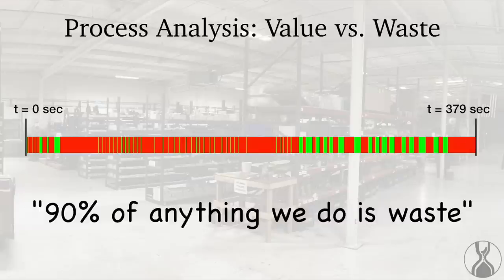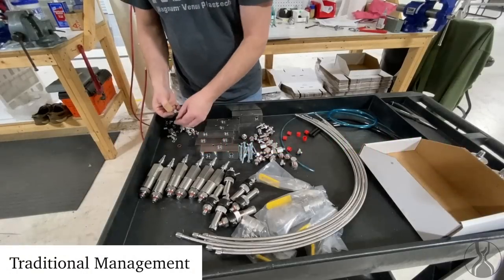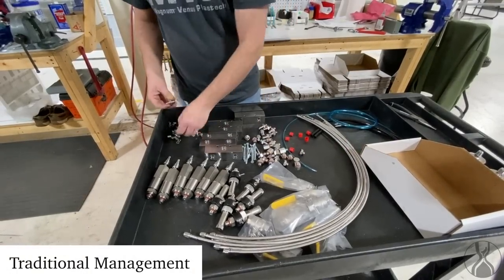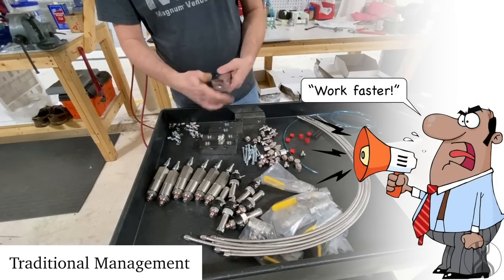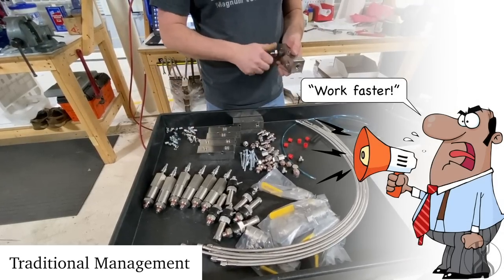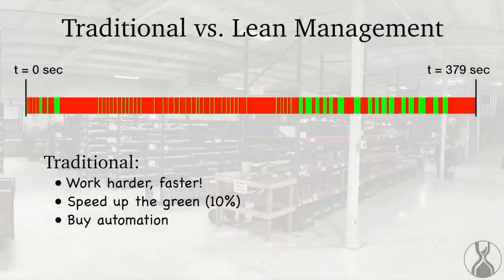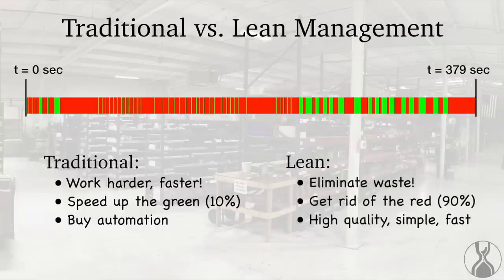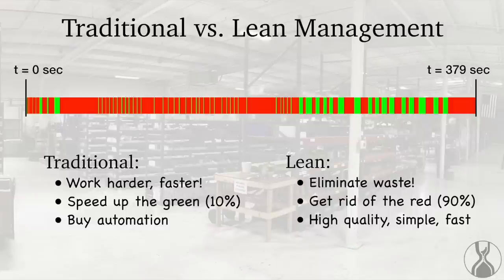And this is the difference between traditional management and lean management. In traditional management, what happens is people scream 'work faster, work harder,' and work their men and machines to the bone. They look at the green time and say, 'we've got to make this work faster and speed up the already short green moments of time.' But the lean mindset is to primarily focus on eliminating waste — to look at the red and get rid of it because it's a huge opportunity. When you get rid of that waste, you create processes that are high quality, simple, and even fast, because the waste isn't in the way. The value — the green — can now flow.